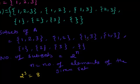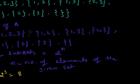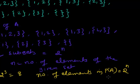Let's count: 1, 2, 3, 4, 5, 6, 7, and 8. So 2 to the power n represents the number of subsets of the given set, where n is the number of elements. P(A) contains all these sets, and the number of elements of P(A) is also equal to 2 to the power n.